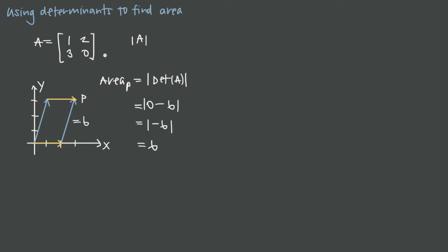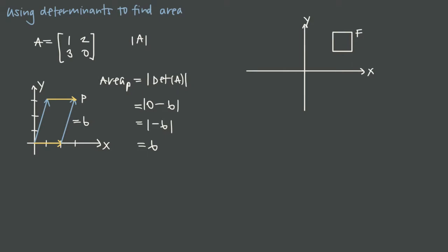The cool thing is that this determinant concept can translate into other figures as well. If we have some pre-image — say a square, which we'll call figure F — and we apply a transformation T to it, the figure might turn into a parallelogram. We'll call the transformed figure G.